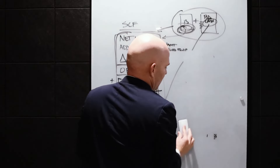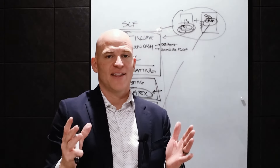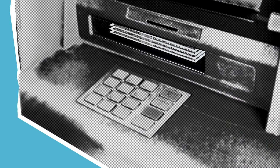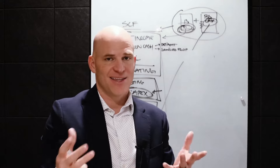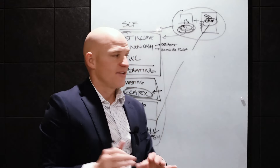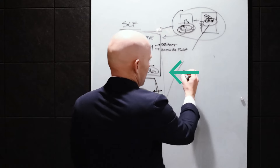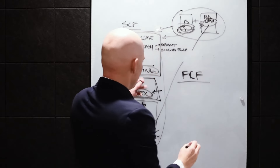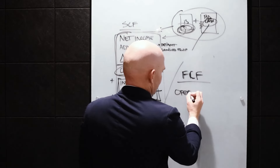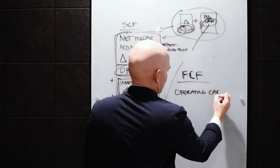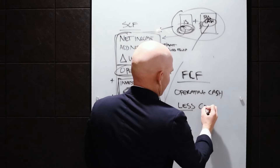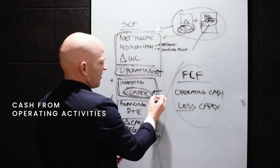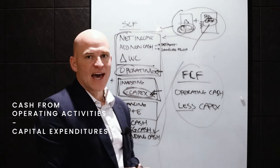Let me walk you through how to compute free cash flow. The long way: take net operating profit after tax from the income statement, add back depreciation and amortization, account for changes in net working capital, subtract CapEx, and you arrive at free cash flow. But the shortcut is to go straight to the statement of cash flows and take cash from operating activities minus CapEx — that's the formula. Free cash flow equals operating cash less CapEx.